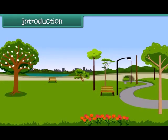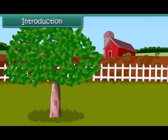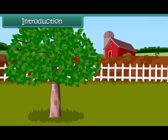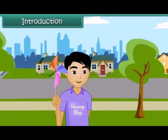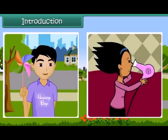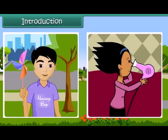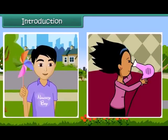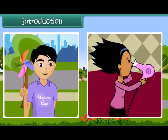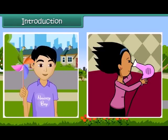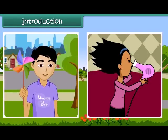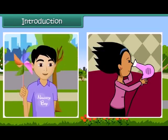Dear friends, do you have any idea as to how a kite flies? How do the leaves of a tree move? Or have you ever played with a paper windmill? How does this happen? Friends, this happens due to the movement of air. Air is present everywhere around us and we can feel it.